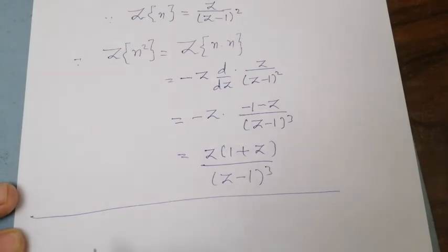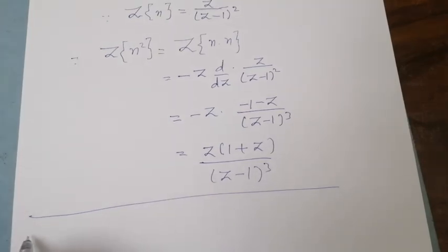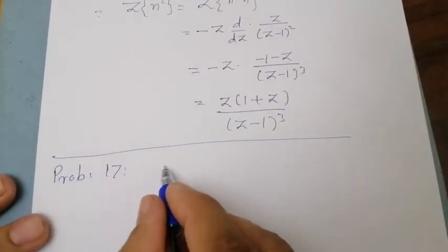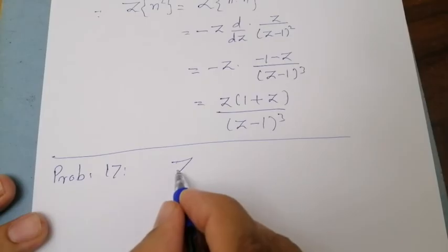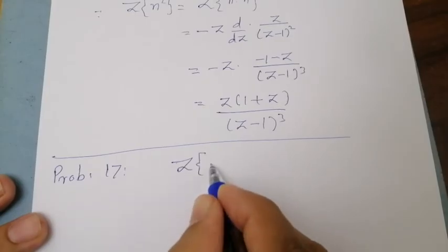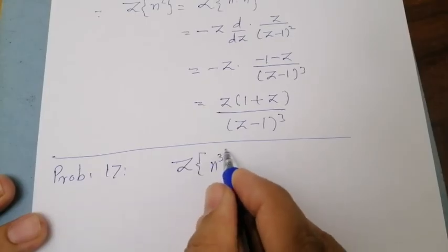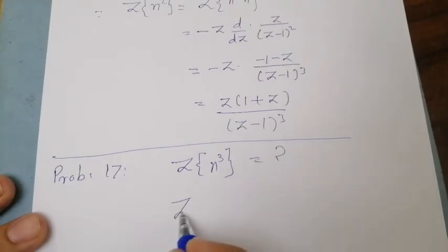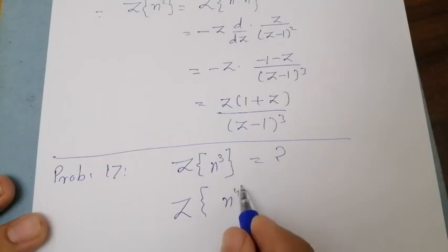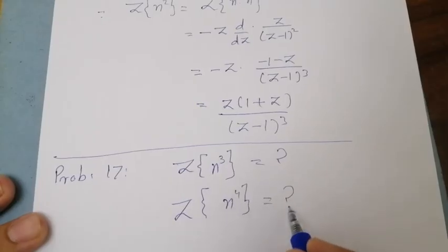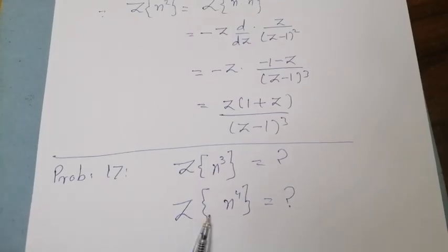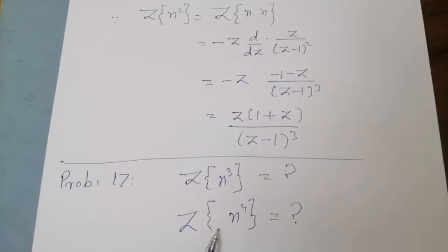Using the same procedure, you have to solve problem number 17: find the Z transform of n³, and then find the Z transform of n⁴. These are the required questions for you to solve.